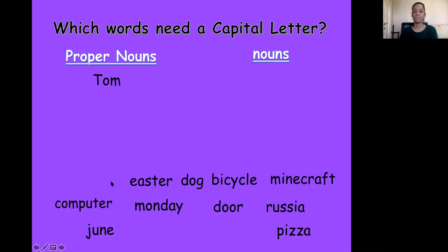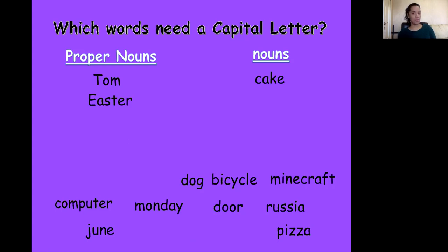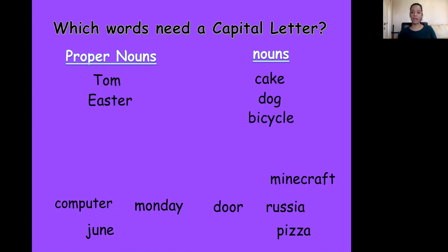How about Easter? We had Easter last weekend here in Russia, for those that celebrate it. Easter is a holiday, so we do need to capitalize it. It is a proper noun. We have dog — dog is an animal, but is it a name? No. Not all dogs we call dog; each dog we give a name. But dog is the name of an animal, so we just leave it as a noun, not a proper noun. Bicycle — is that an object? Yes, it's just a normal noun as well.